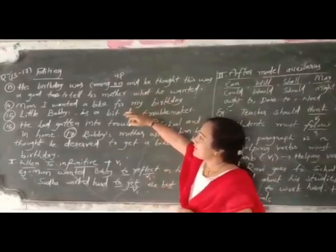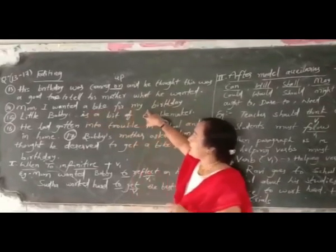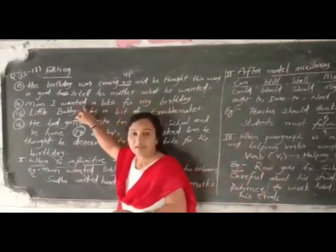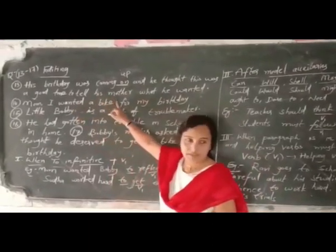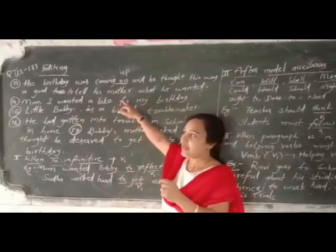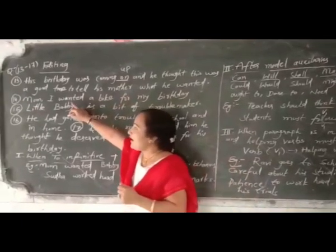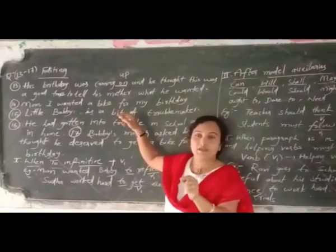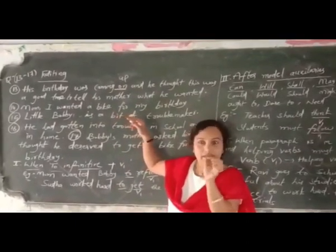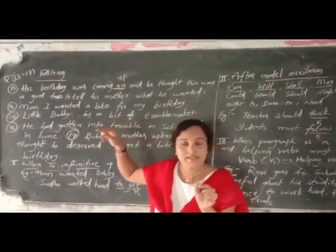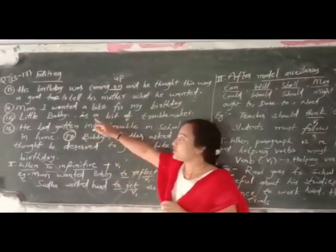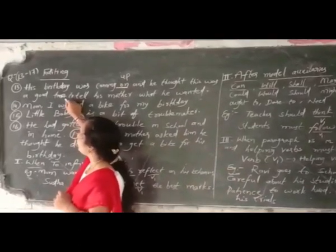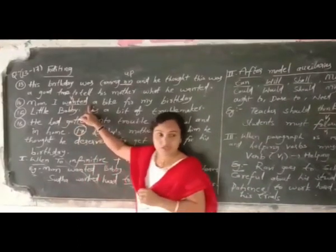And here in the final sentence: 'Mom, I wanted a bite for my birthday.' Look — Bobby asked directly to his mother here, came into the kitchen and asked. Not 'I wanted a bite' — it should be 'I want a bike.' In the story, at that time, he is asking, so it should be 'I want,' not 'I wanted.'